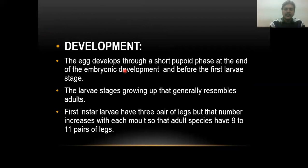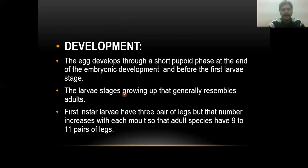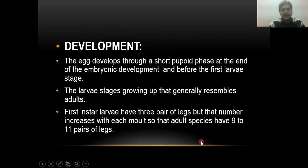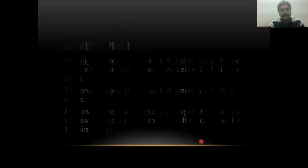The pupoid larval form develops, and the larval stages grow up to generally resemble adults. The first instar larva has three pairs of legs. With each molt, segments and legs are added until reaching the adult complement of nine pairs of legs on 11 segments.